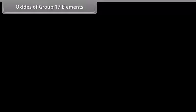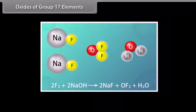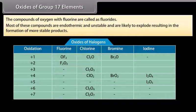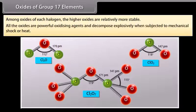Oxides of group 17 elements: Halogens do not combine with oxygen directly. For example, oxygen difluoride (OF₂) is prepared by the action of fluorine on 2% sodium hydroxide solution. The compounds of oxygen with fluorine are called fluorides because fluorine is more electronegative than oxygen. Most of these compounds are endothermic and unstable and are likely to explode forming more stable products. Among oxides of each halogen, the higher oxides are relatively more stable. All oxides are powerful oxidizing agents and decompose explosively when subjected to mechanical shock or heat.